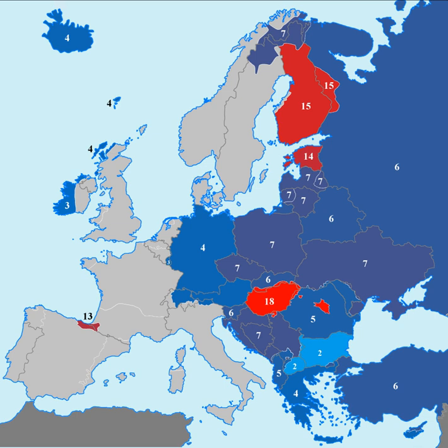Among modern languages, cases still feature prominently in most of the Balto-Slavic languages, with most having six to eight cases, as well as Icelandic, German, and Modern Greek, which have four. In German, cases are mostly marked on articles and adjectives and less so on nouns. In Icelandic, articles, adjectives, personal names, and nouns are all marked for case, making it the living Germanic language that most closely resembles Proto-Germanic.